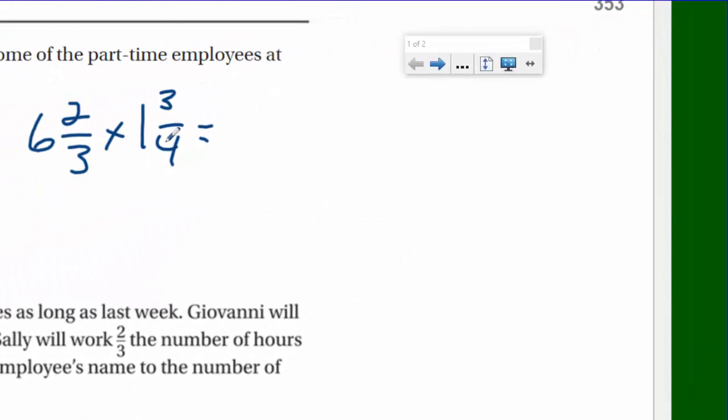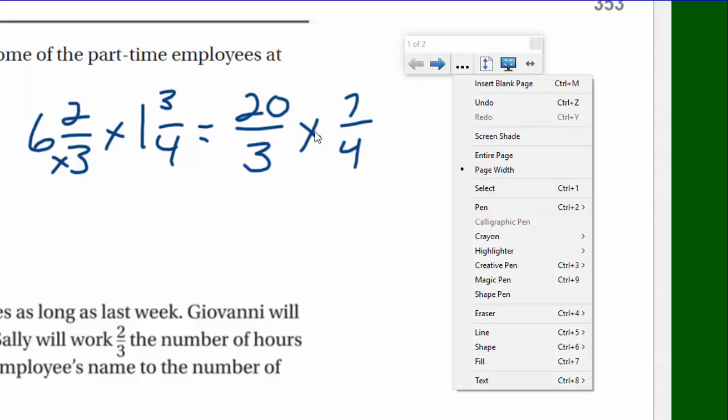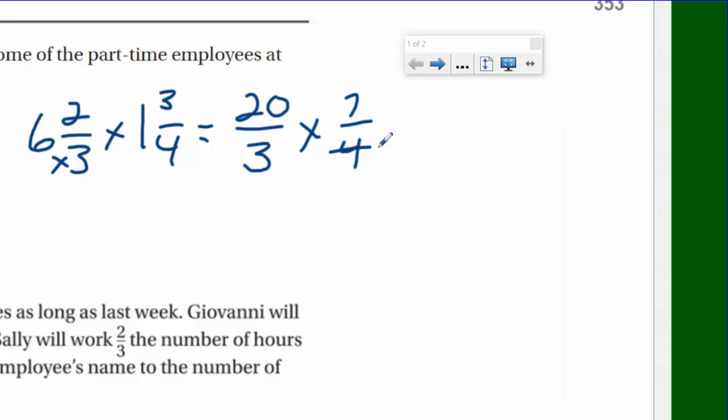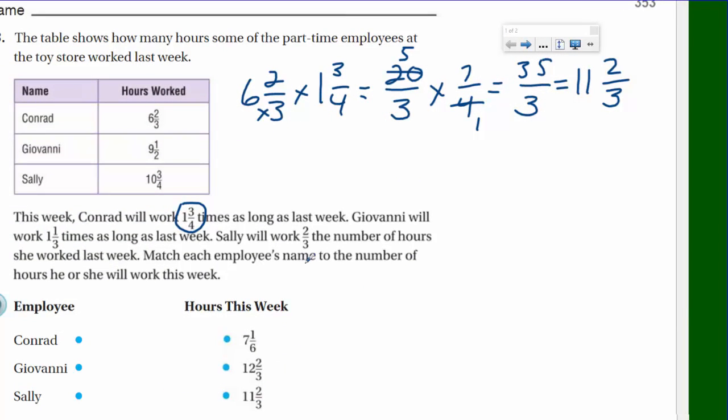Let's change this into fractions greater than one, or improper fractions. This is 6 times 3, 18 plus 2 is 20, so we have 20/3. Then we multiply that with 4 times 1 plus 3, giving us 7/4. I always look for opportunities to cancel or divide out common factors. Here we have a common factor of 4, so I'm going to divide that out, getting 5 up there. Now we end up with 35/3. If we put this back as a mixed number, 3 goes into 35 about 11 times. 11 times 3 is 33 with 2 left over, so he would have worked 11 and 2/3.